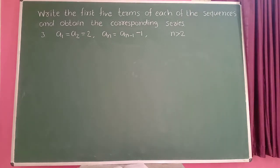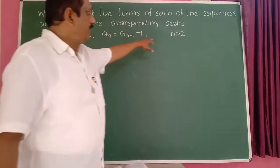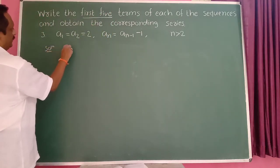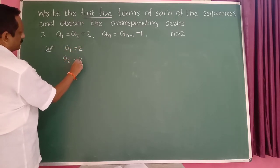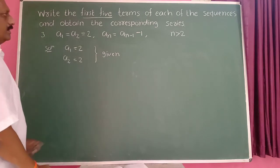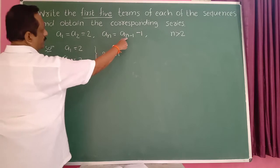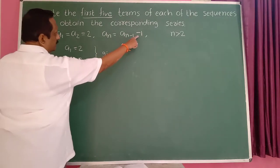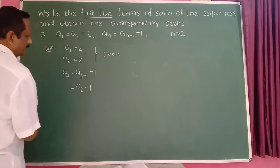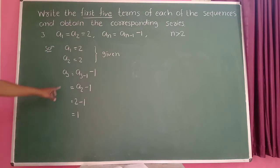Next, a_1 is equal to a_2 is equal to 2. The first two terms are both 2. For n greater than 2, use the recurrence relation. So a_3 is equal to a_(3-1) minus 1. That is a_2 minus 1. But a_2 is equal to 2. So 2 minus 1 is 1. The third term is 1.